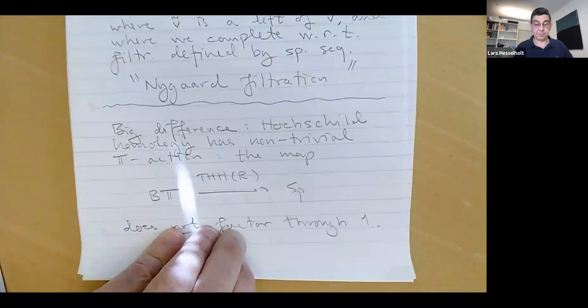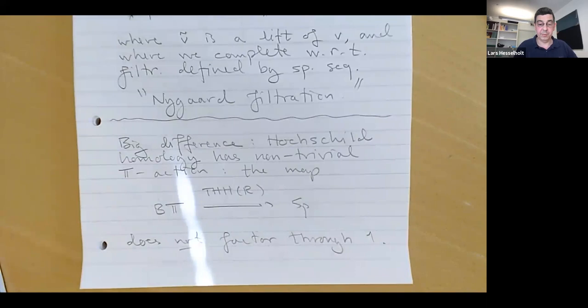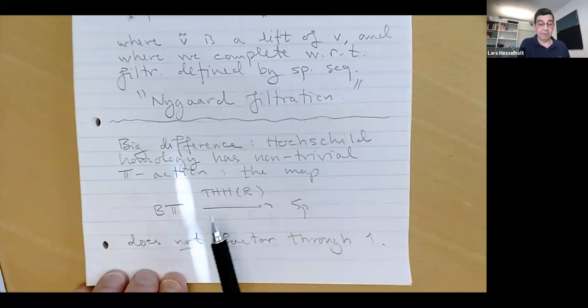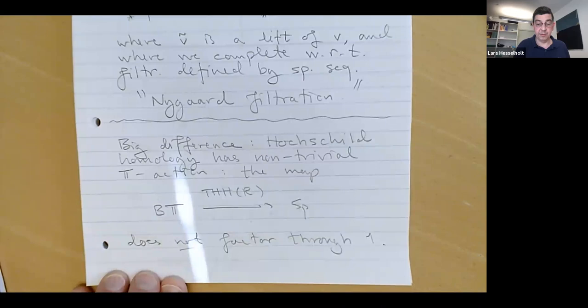Now to Hochschild homology. The big difference — which is the fantastic discovery that Connes and Tsygan made in the 80s — is that Hochschild homology has a circle action which is not trivial. I put a T here for topological Hochschild homology, but there's no distinction here between Hochschild homology and topological Hochschild homology. In any case, if we have a ring R, then Hochschild homology is a spectrum with a circle action, and this action does not factor through the point — it's not a trivial action.